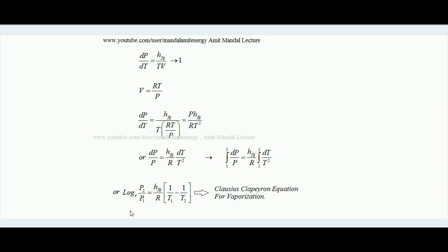The beauty of this formula is: given initial pressure P1 and boiling point T1, if the pressure changes to P2 (a small change), the new saturation temperature T2 can be found using this equation, since HFG and R are constants. So the Clausius-Clapeyron equation allows us to estimate how the boiling point changes with a small change in pressure. I hope you have understood what the Clausius-Clapeyron equation is and its physical significance.